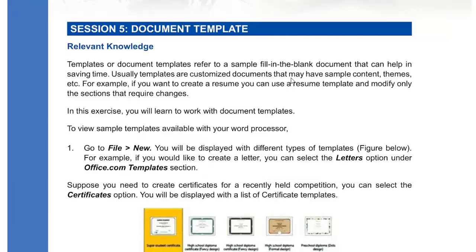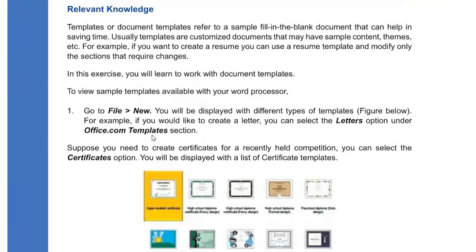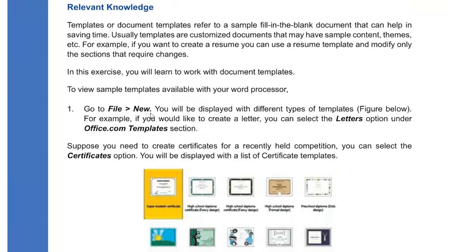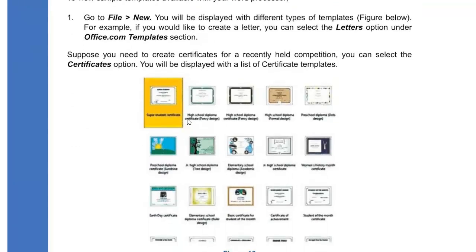Templates are customized documents that may have sample content, themes, and so on. They already have some sample content created in the document which you can merge into your own. You can replace the placeholder information with your own, but the design in the template remains fixed. To view templates available in your word processor, go to File > New and you will be displayed with different types of templates. Just click on any of them and start using it.